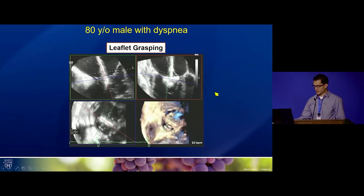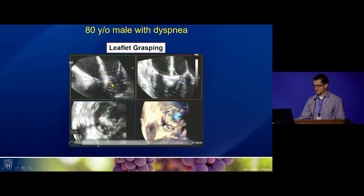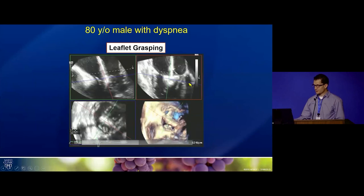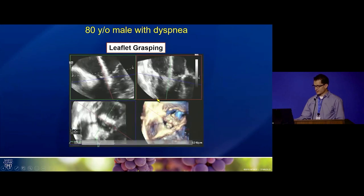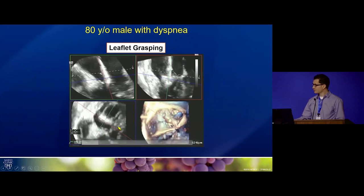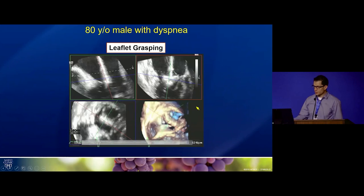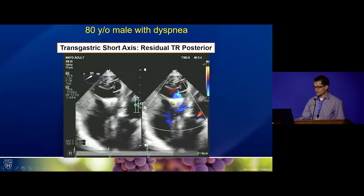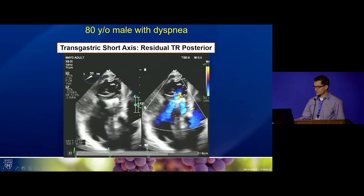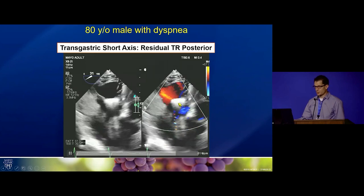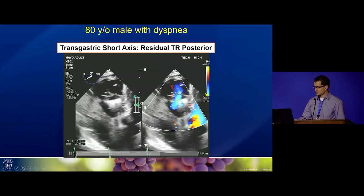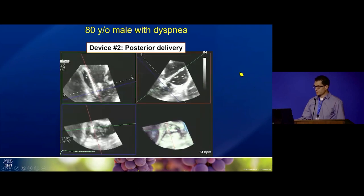During grasping, after crossing the leaflets with the device just into the right ventricle, we can see in the septal-lateral dimension that we've grasped the septal leaflet and the lateral leaflet — confirmed as the anterior leaflet by the short axis view. Looking at the transgastric view, residual TR was pinned posterior to the device, which is typically what we want. We were happy with the grasp.